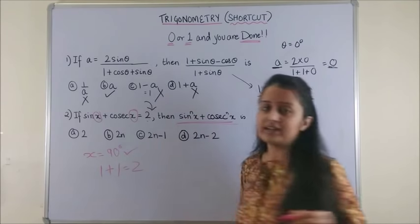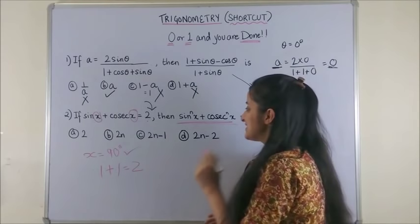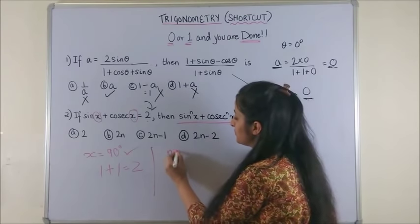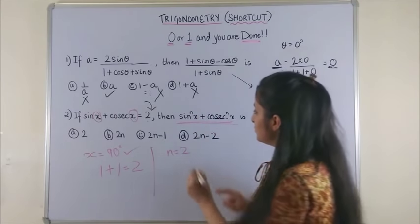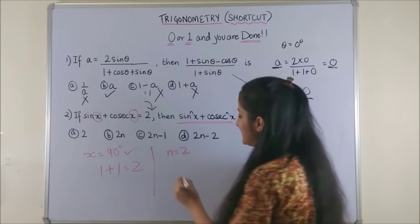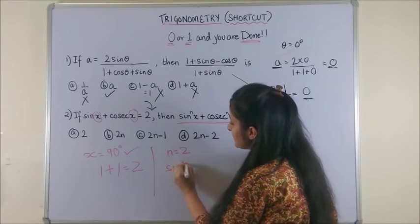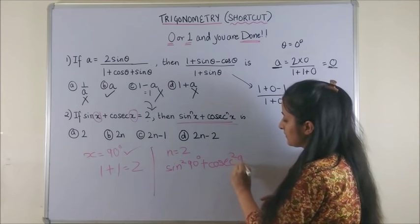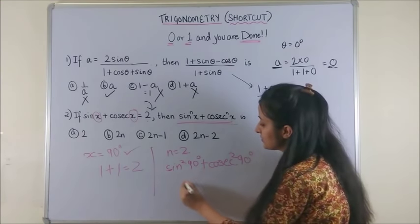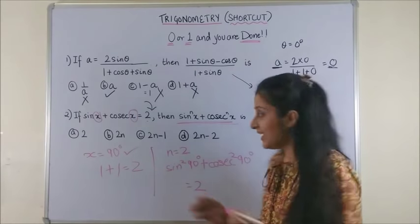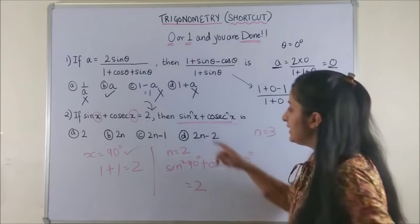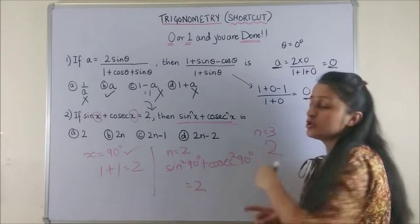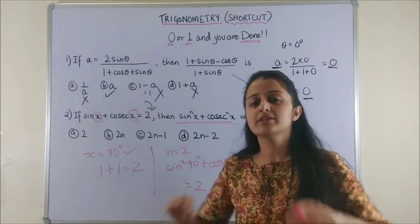If I try taking x as 90 degrees, this becomes sin 90 which is 1, cosecant 90 again 1. This is 2. So, that means x equal to 90 degrees works perfectly for us. Similarly, so now what you are going to do is, let's say try putting n as 2. If you try putting n as 2, your x has been chosen to be 90 degrees. So, sin square 90 degrees plus cosecant square 90 degrees, it is still going to give you 1 plus 1 that is 2. Similarly, I try taking n as 3. It gives me sin cube 90 degrees plus cosecant cube 90 degrees again 2.